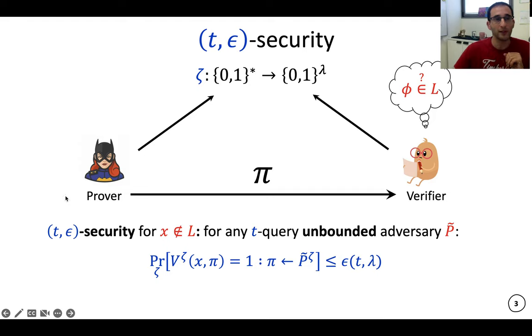So more formally, we have (t,ε)-security, meaning that for any X not in the language, any t-query may be potentially unbounded adversary. So this is an adversary that performs at most t queries to the random oracle, but other than that, computationally it can be unbounded. So for any such prover, the probability that this prover outputs π that makes the verifier accept is at most ε. And ε can be a function of t and λ. So this is the security definition of SNARGs in the random oracle model.